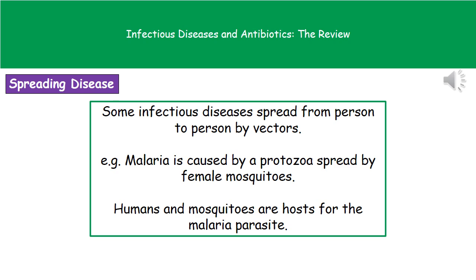Some infectious diseases don't spread directly from one person to another — they use something called a vector. A vector is something like a mosquito: it lands on one person, bites them, sucks some blood and picks up a pathogen, then flies to someone else and bites them, spreading that pathogen to a new person. Malaria is caused by a protozoa and spread by female mosquitoes as vectors.